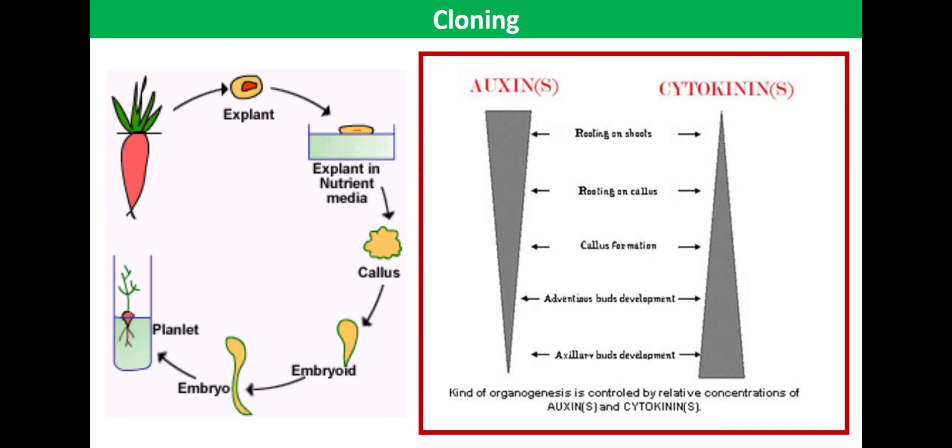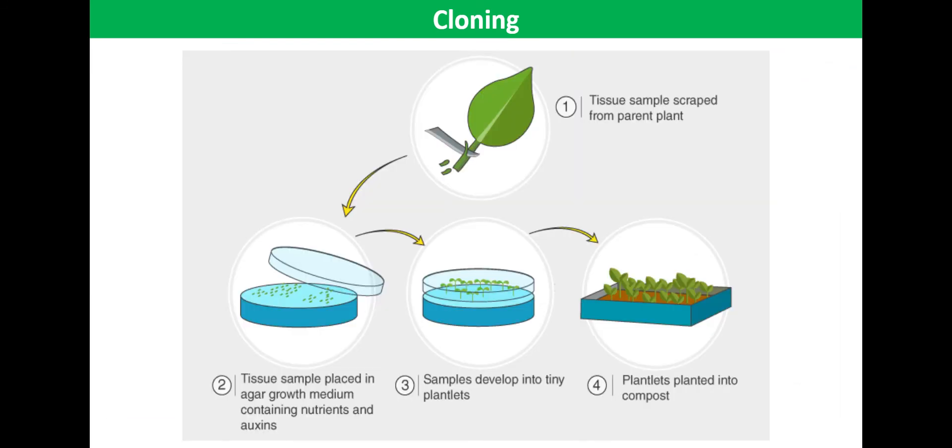Once the tiny plantlets have formed, they are transferred to a greenhouse to be grown in compost or soil and acclimatized to normal growing conditions.